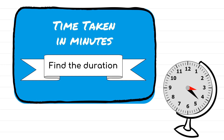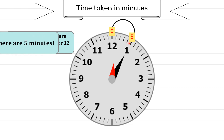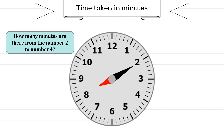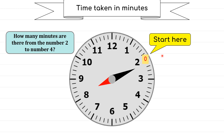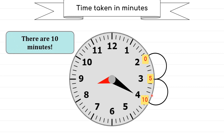Now we will find the time taken in minutes. Looking at the clock, from number 12 to number 1 there are 5 individual minutes — so 1 hop represents 5 minutes when talking about time taken in minutes. For example, if the minute hand moves from 2 to 4, start from number 2, write 0 on top, and start hopping: one hop gives 5 minutes, another hop gives 10 minutes. So there are 10 minutes from 2 to 4. Each hop means 5 minutes.